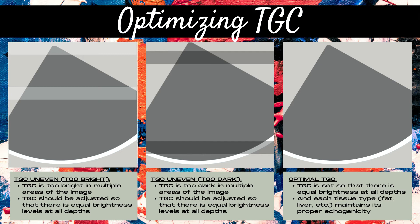One of the most common ways to improve an image is ensuring that when imaging an organ, such as the spleen or the kidney, that organ has equal brightness levels throughout. It's very common for the top part of the spleen to be darker than the rest, so bumping the TGC control up at that depth level will give the spleen nice, even brightness levels throughout.